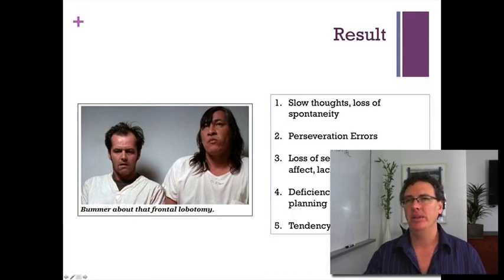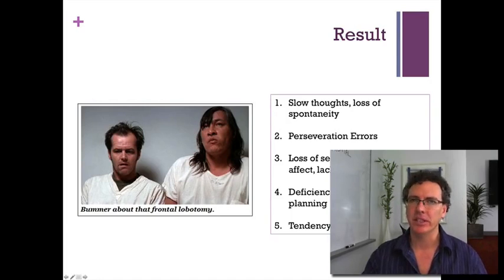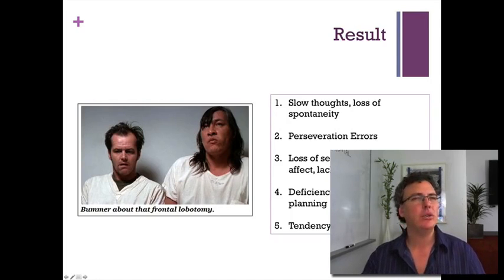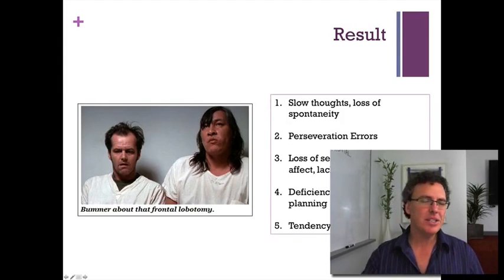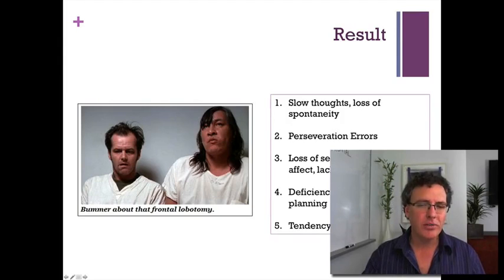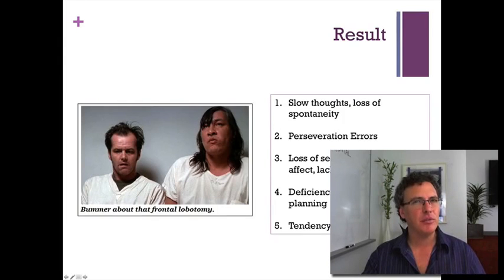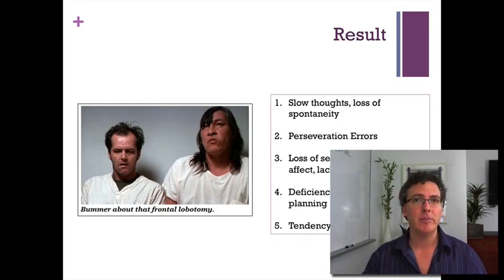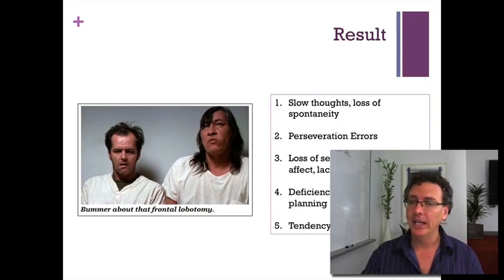They lose their sense of empathy — the ability to feel what someone else is feeling, to feel their pain or share their happiness. These patients don't seem able to do that anymore. This tells us the frontal lobes are really critical for feeling what others feel, responding in an appropriate emotional way, and having some sense of ourselves.